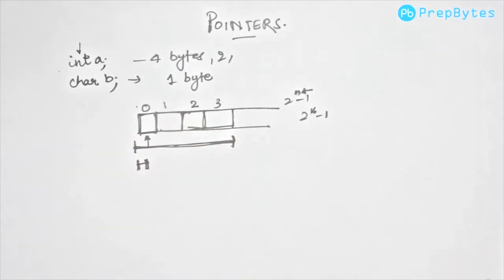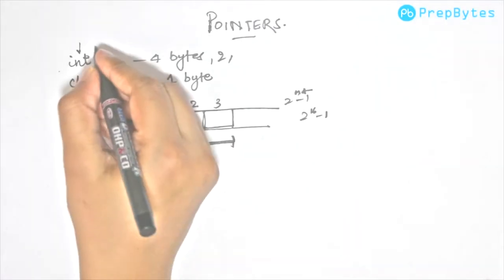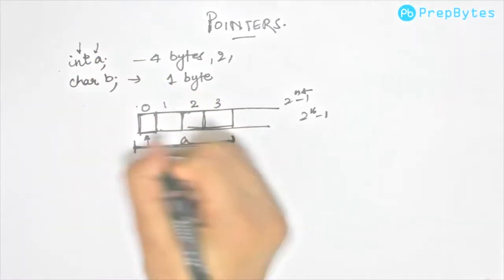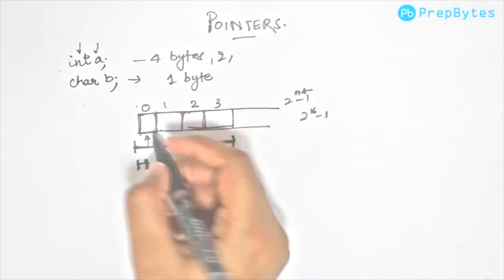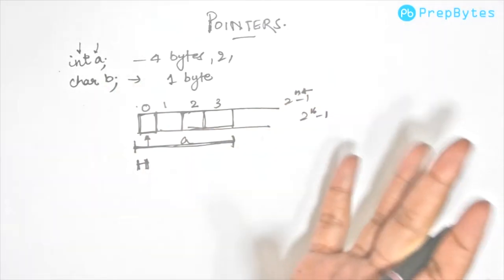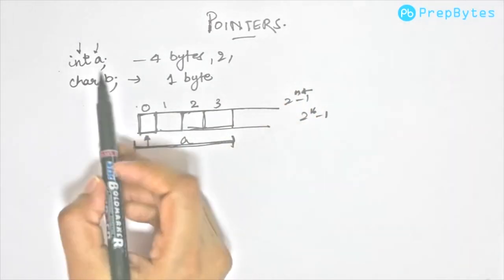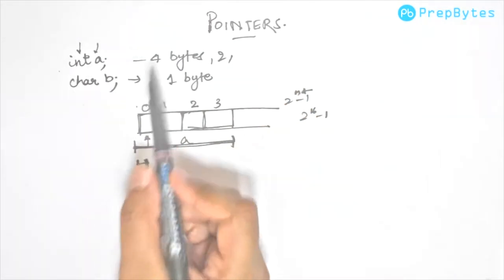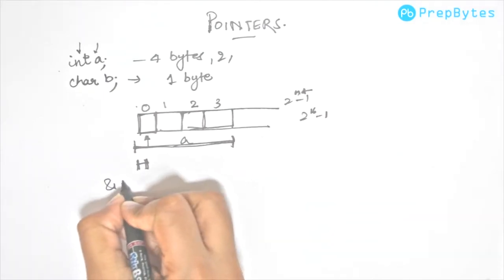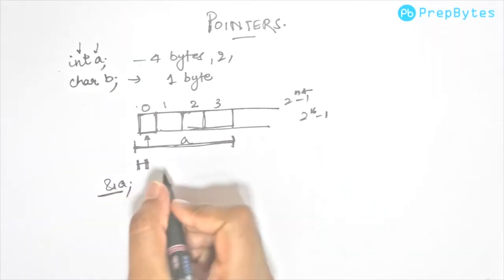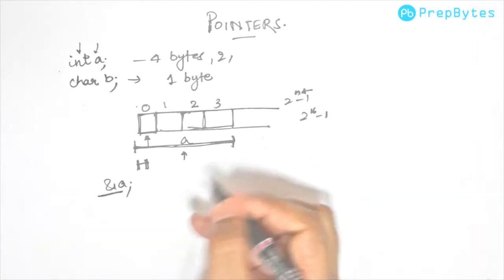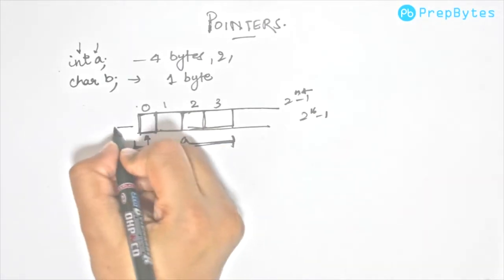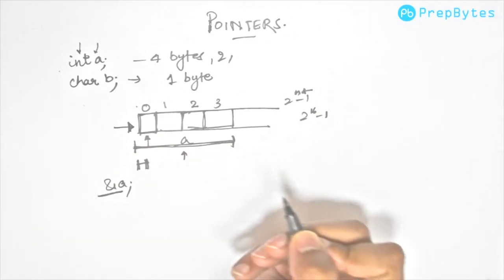Now let's say we have integer a and it is stored over these 4 bytes. I want to know what is the address where a is getting stored. You can know about the address of a using ampersand a. Ampersand a gives you base address of variable a. When I say base address, it gives you address of this first byte.